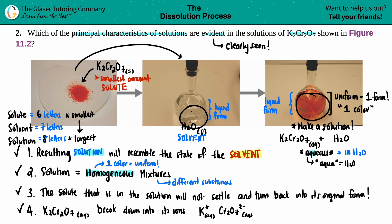So those are all the evident characteristics: the solution resembles the solvent, there's no settling, and it's always a homogeneous mixture. Hope this helped! Let me know in the comments, and check out the channel — we've got physics and math videos too, with more subjects coming. Talk to you soon!